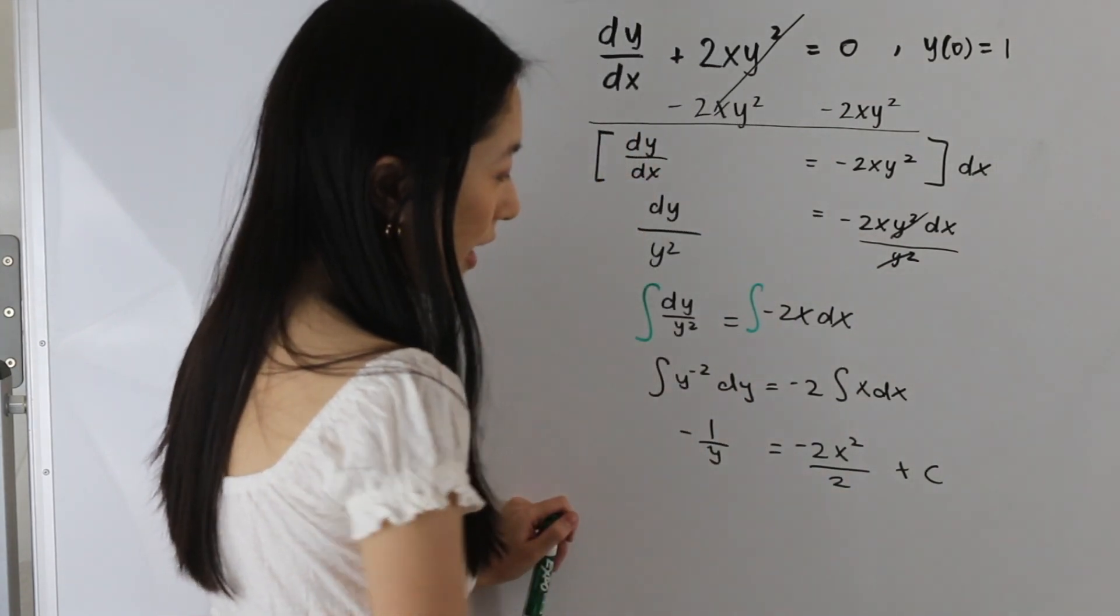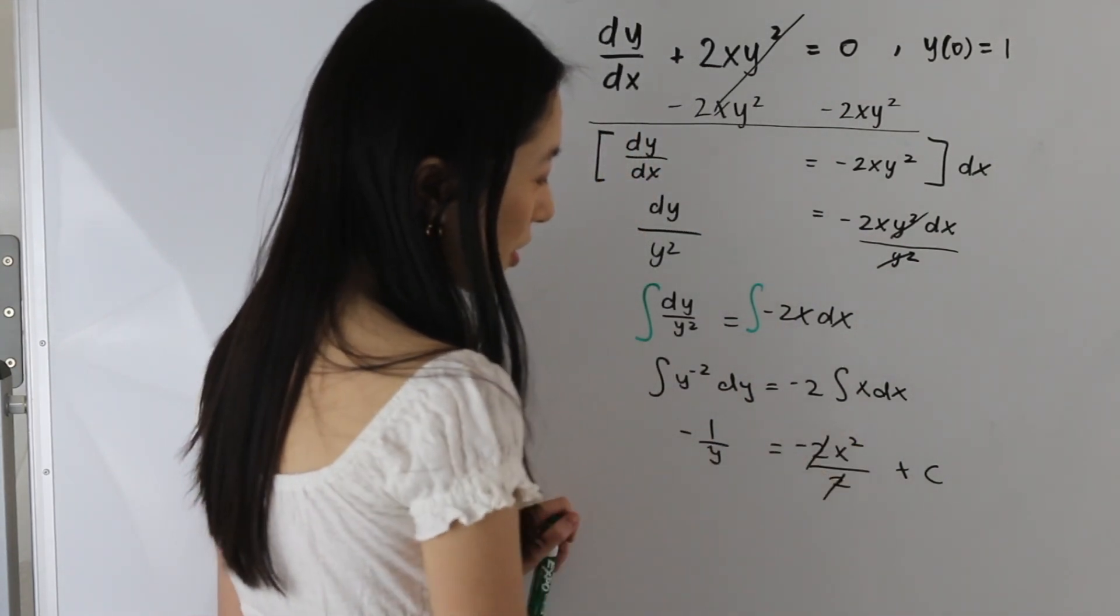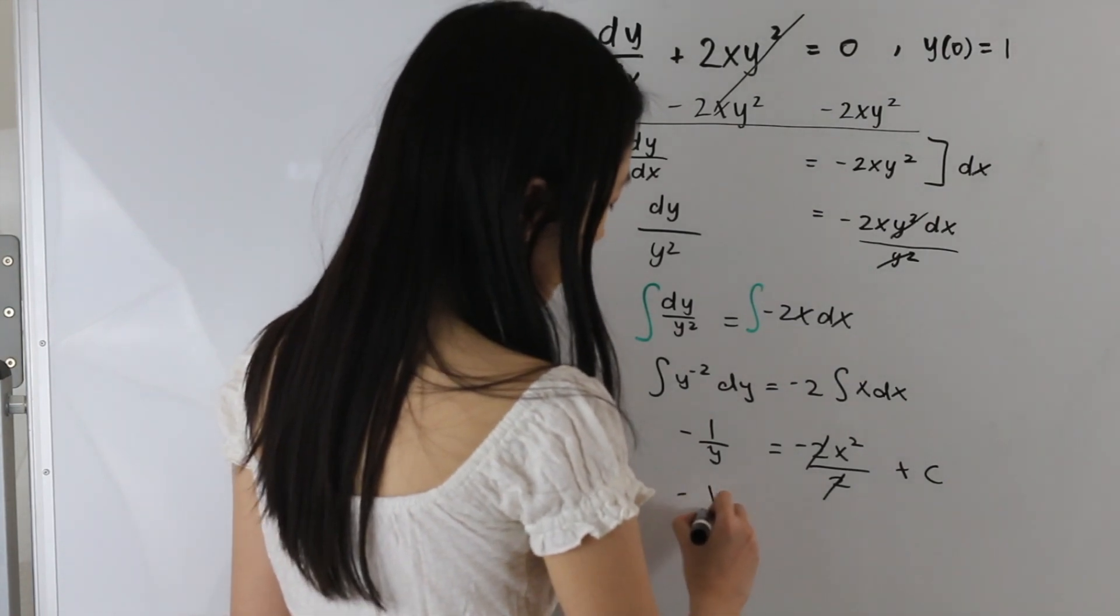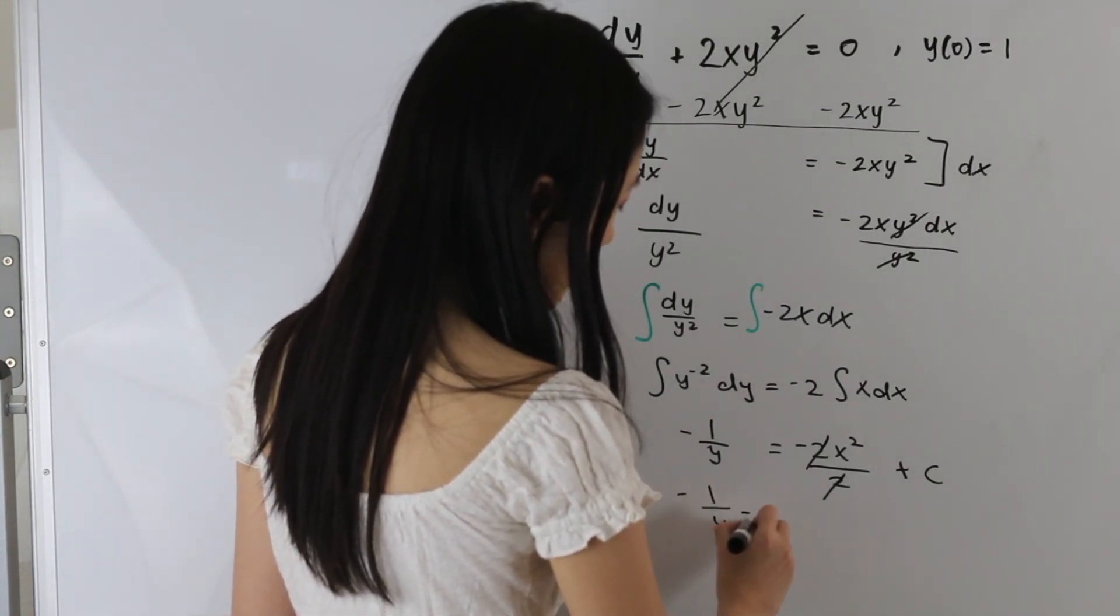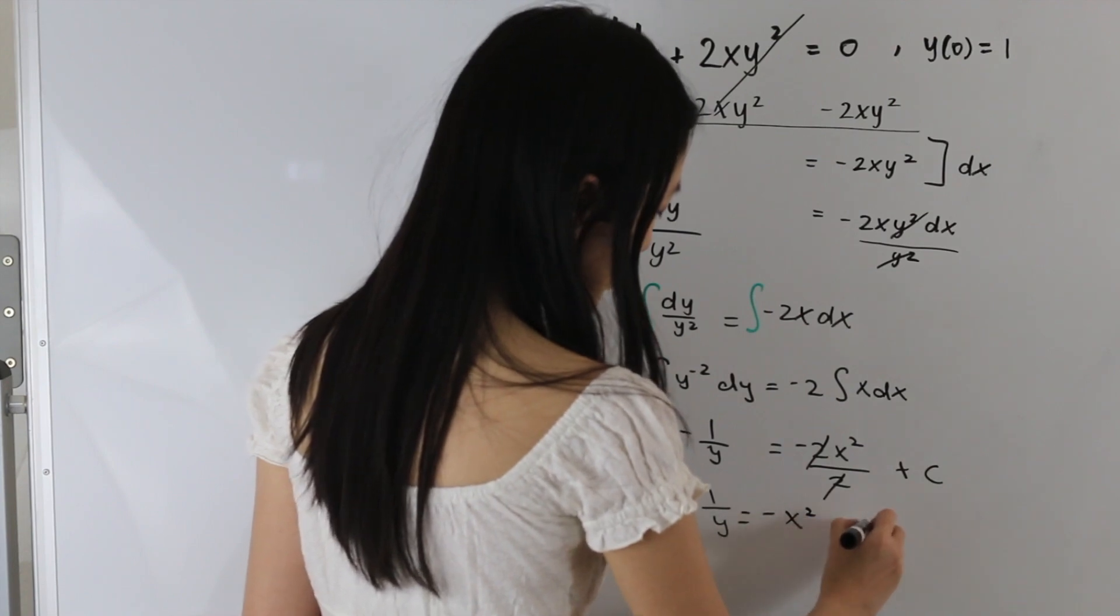Let's go ahead and cancel out these two terms. So we end up with negative 1 over y is equal to negative x squared plus c.